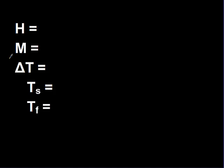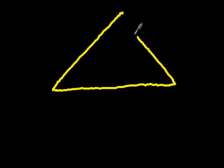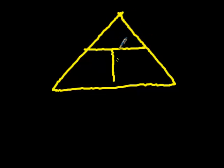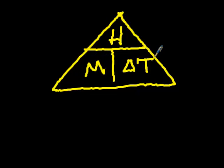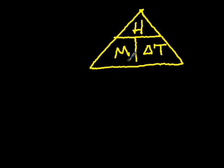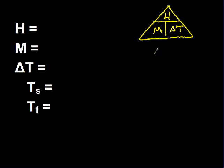Let's go back and look at the pyramid that we use as a reference tool. So I'm going to draw a pyramid over here to the side. I have heat at the top, mass here, and Delta T — my change in temperature — here. I know that I'm going to have two of these three variables. These aren't the exact problems from your homework, but they'll be something you can reference.